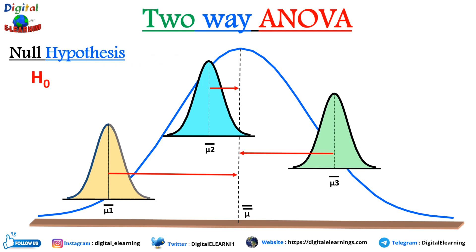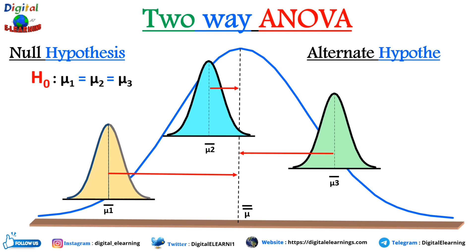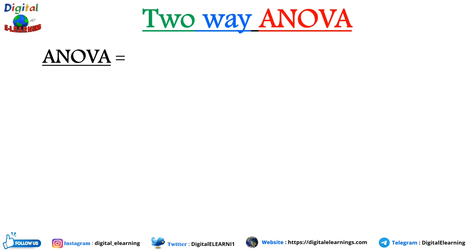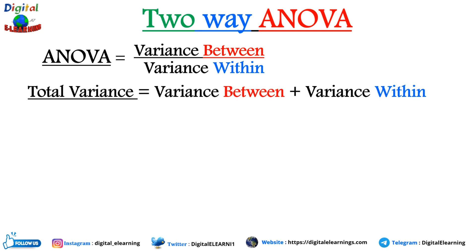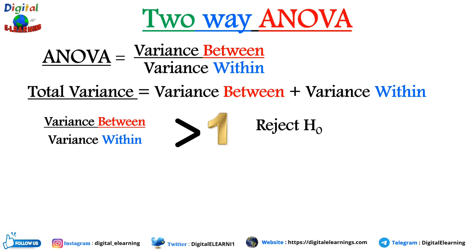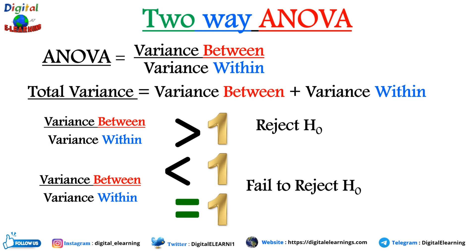The null hypothesis H0 states mu1 = mu2 = mu3. The overall F-statistic quantifies the ratio of between-group variation compared to within-group variation. Total variance equals variance between plus variance within. If this ratio is greater than 1, we reject the null hypothesis. If it is less than or equal to 1, we fail to reject the null hypothesis. If between-group variation is high relative to within-group variation, the F-statistic will be higher and the p-value lower, making it more likely that we reject the null hypothesis.